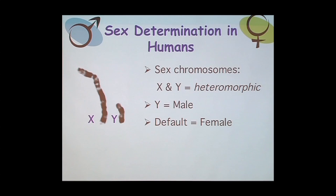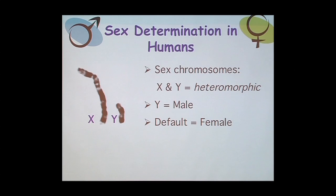In humans, what determines the sex is the Y chromosome. The presence of the Y chromosome means male. The absence of the Y chromosome — the default — is female. Simple as that: presence of the Y chromosome is male.